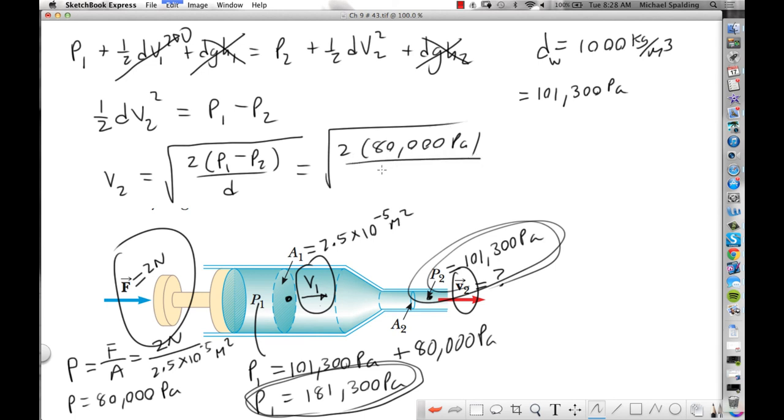And then what's the density of water? 1,000. And then this comes out as 12.6 meter per second.